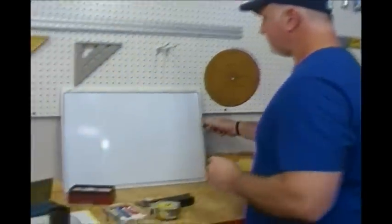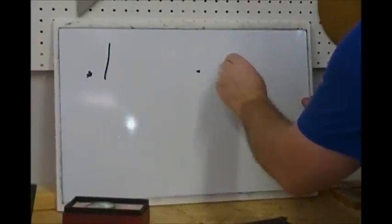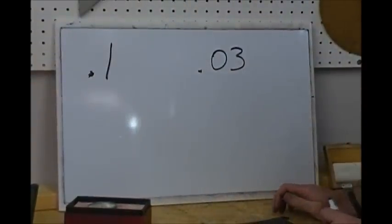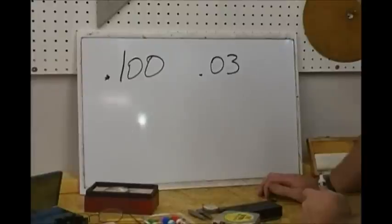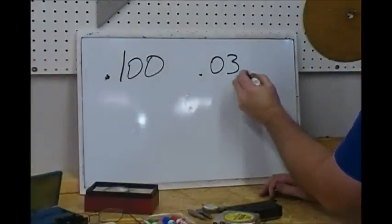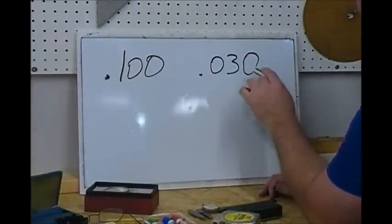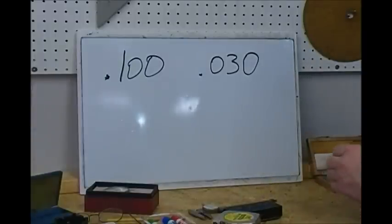Thousandths of an inch is the industrial standard, so you can just about forget everything your teacher taught you in school when she was teaching you decimals. In school they would have you read 0.1 as one-tenth of an inch, or 0.03 as three hundredths of an inch. But in the industry we refer to everything in thousandths of an inch — so we'd call that one hundred thousandths. That's why the machinist in our video didn't understand the young lady: she said three hundredths, but if she had said thirty thousandths of an inch, he would have known exactly what she was talking about.